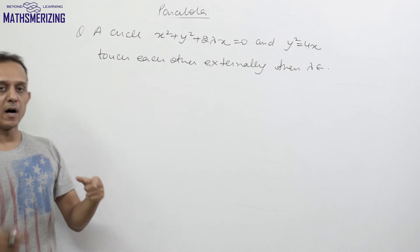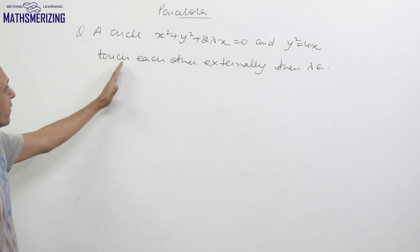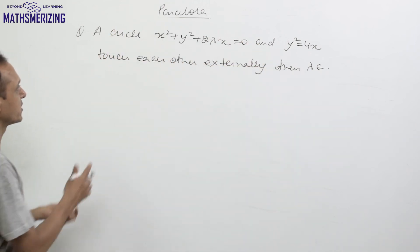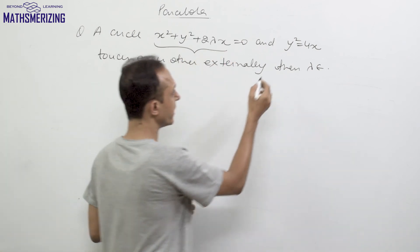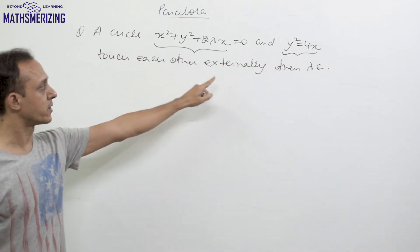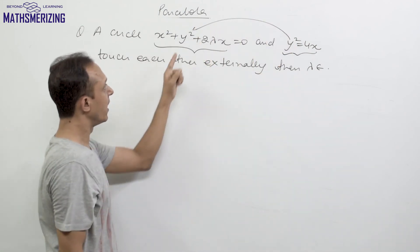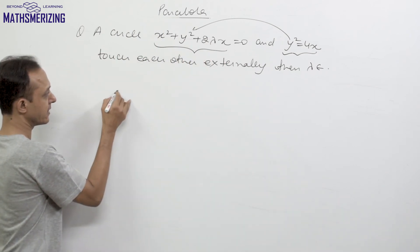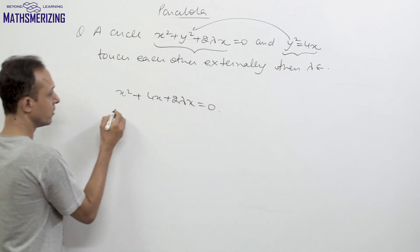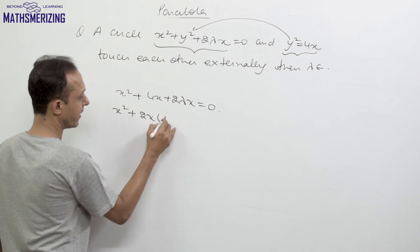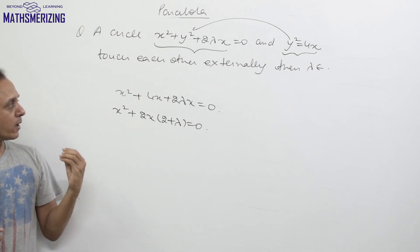We can use the same method for the condition of tangency between a circle and a parabola. Here, the circle x² + y² + 2λx = 0 and the parabola y² = 4x touch each other externally; we need to find λ. Substituting y² = 4x gives x² + 4x + 2λx = 0, which factors as x² + 2(2 + λ)x = 0.